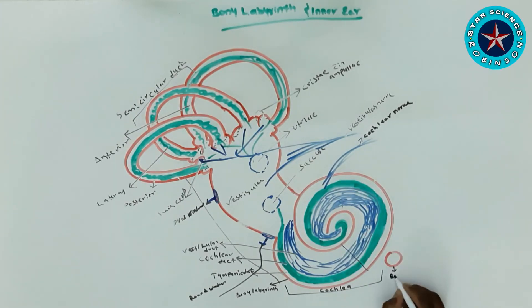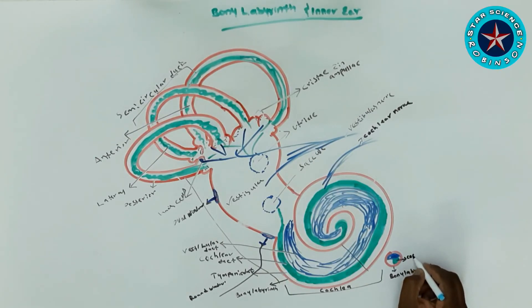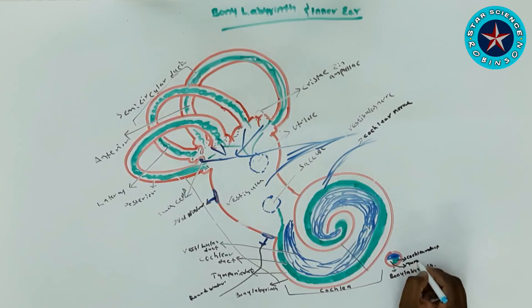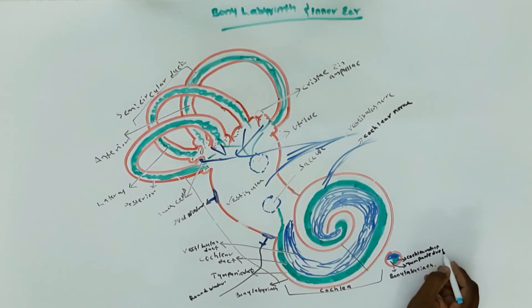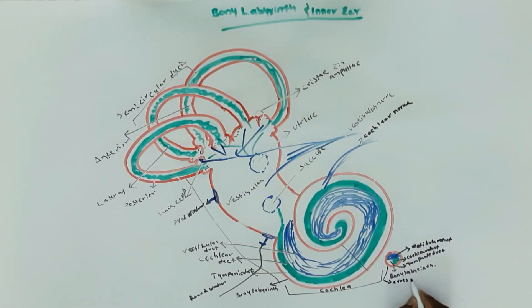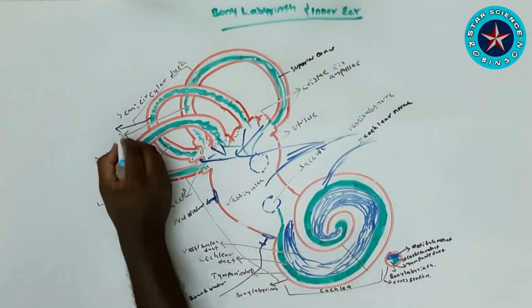Now we will see the structure of the cochlea in cross-section. In our diagram, the bony labyrinth is shown in red. This particular portion in the middle is the cochlear nerve or scala media. Below we can see the scala tympani duct and above it is the scala vestibuli duct. The scala vestibuli and scala tympani contain perilymph, while the scala media or cochlear duct contains endolymph.